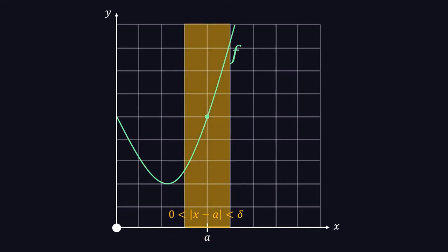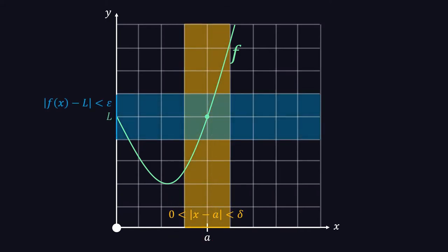Now, if we plug in the values of x in this region to our function f, we get a corresponding region where the values of f(x) are close to some number L by a certain distance, say, epsilon.